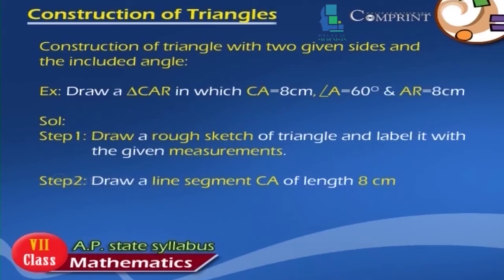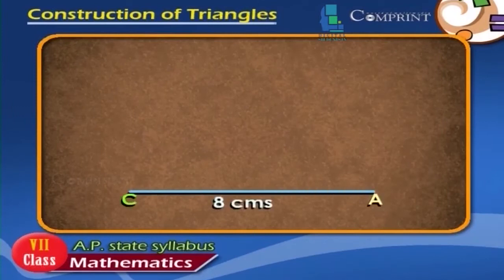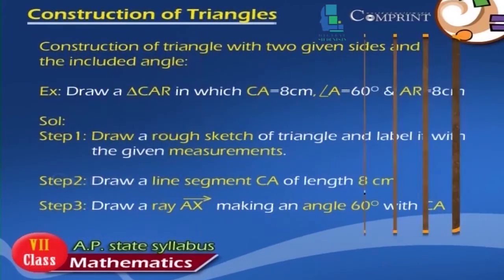Solution. Step 1: Draw a rough sketch of the triangle and label it with the given measurements. Step 2: Draw a line segment CA of length 8 cm. Step 3: Draw a ray AX making an angle of 60 degrees with CA.